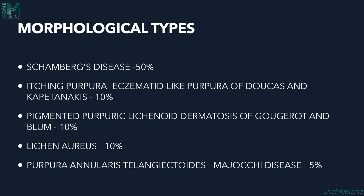There are several morphological types of PPD. The most common is Schamberg's disease, accounting for approximately 50% of cases.